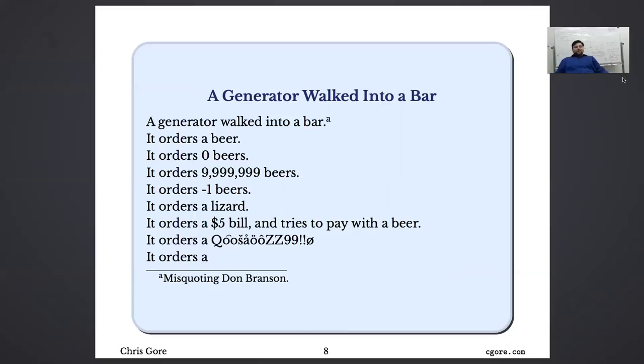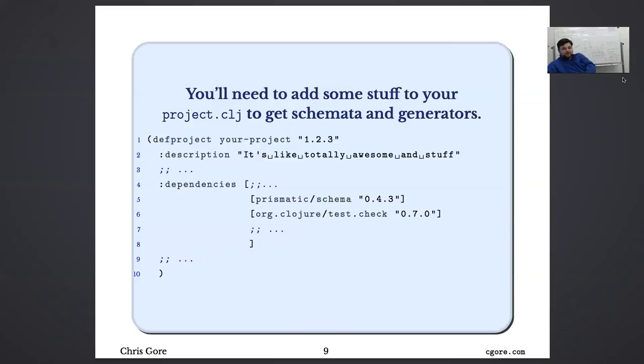Here's an awesome joke I stole from somebody Val knows: a generator walked into a bar. It orders a beer. It orders zero beers. It orders 9,999,999 beers. It orders negative one beers. It orders a lizard. This is basically what you want generators to do, and unfortunately that's what they do.